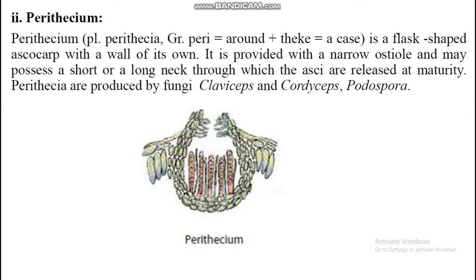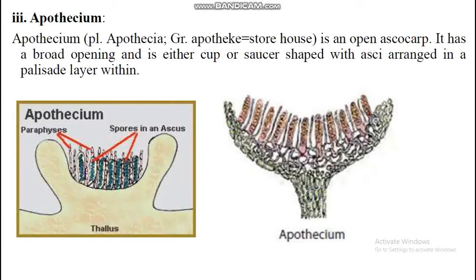Apothecium: an apothecium is an open ascocarp. It has a broad opening and is either cup or saucer-shaped. The asci are arranged in a layer called the hymenium, along with paraphyses.